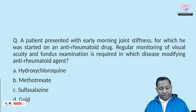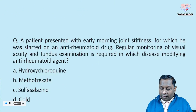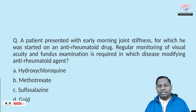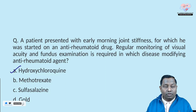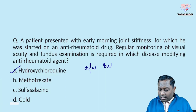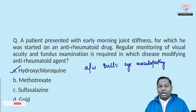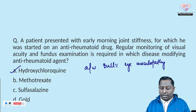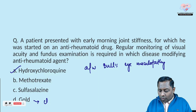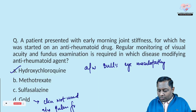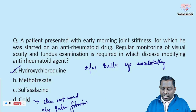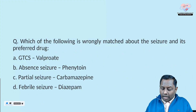The third question: a patient with early morning joint stiffness started on an anti-rheumatoid drug requires regular monitoring of visual acuity or fundus examination — which drug? Hydroxychloroquine is associated with bull's eye maculopathy, which is irreversible. Therefore, any patient on hydroxychloroquine needs visual acuity checks. Gold is also associated with pulmonary fibrosis but is not clinically used anymore.